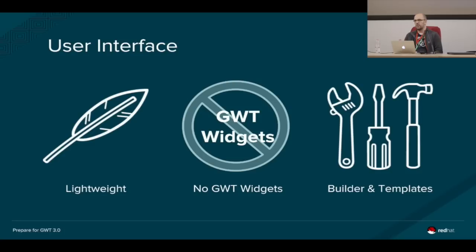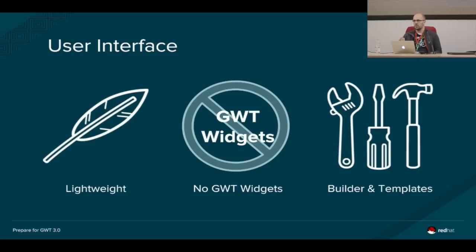For the user interface, we decided to be very lightweight. We used to have lots of GWT widgets and cell widgets, and we decided to get rid of them and use what's already in 2.8 — basically the Elemental API. We try to use basic DOM elements whenever possible. The goal was to remove all the GWT widgets, which took some time, but once you have a foundation and a small API, it really pays out. You get a much cleaner DOM tree in the end.